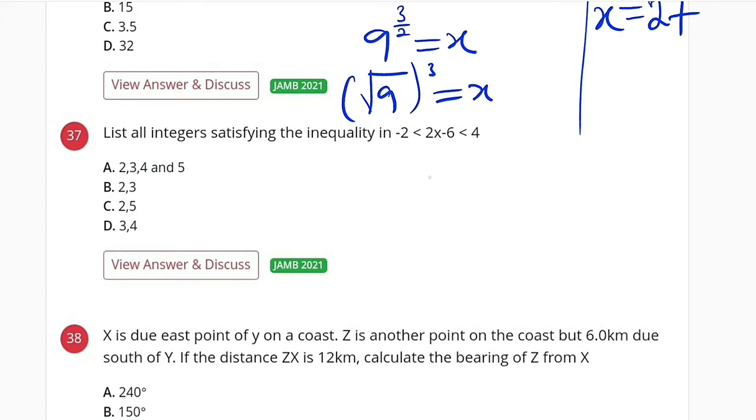This is a simultaneous linear inequality. We are going to break it down into two inequalities. The first one: -2 < 2x - 6. So we are grouping them. We take the first two numbers, -2 < 2x - 6.